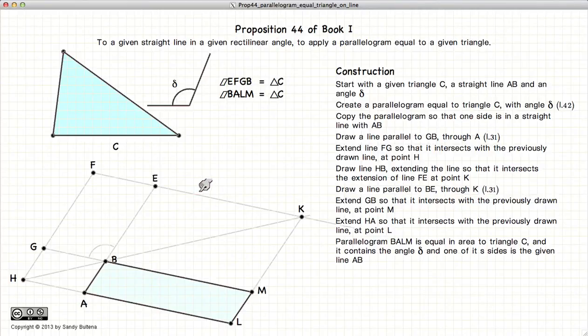And the proposition states that if you follow these instructions, the area of the triangle is going to be equal to this parallelogram on line segment AB and containing the angle delta.